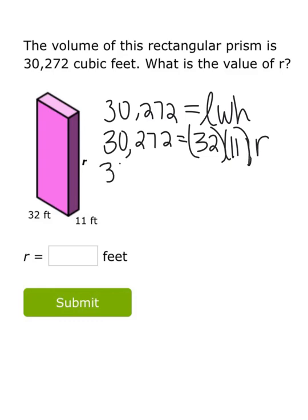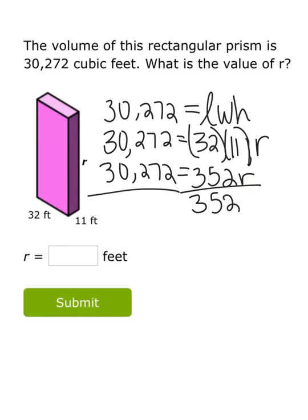So let's simplify what we can. 32 times 11 would be 352 times R. And then I would divide each side by 352 to isolate R. 30,272 divided by 352 is 86. So my height, or R, would be 86 feet.